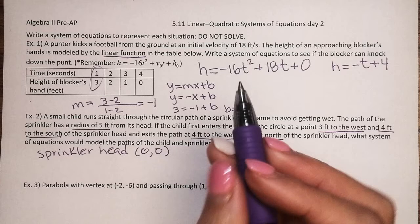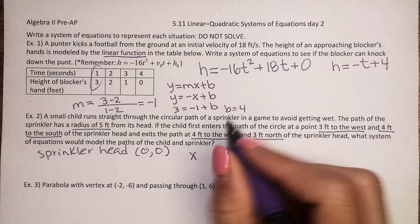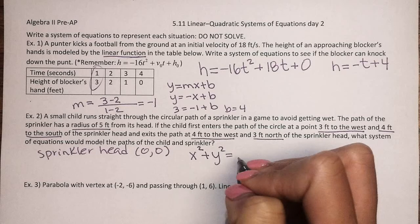So for my sprinkler, we know that the radius is 5 feet. So if I just let the center be at 0, 0, then I'm just going to write x squared plus y squared equals the radius squared, so 25.